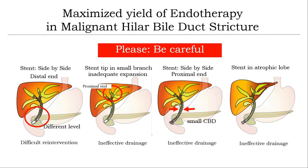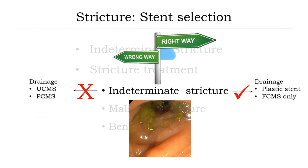Multi-parameter stent placement in hilar stricture — please be careful. Number 1: avoid stent in atrophic lobe except in case of infection. Number 2: small CBD — recommend stent-in-stent better than side-by-side. Number 3: do not place stent too high because it will not properly open. And lastly: for side-by-side technique, keep the distal ends at the same level inside the bile duct. Once again, please remember: do not place uncovered stent in indeterminate stricture.